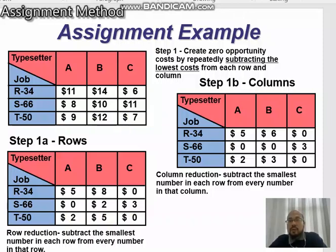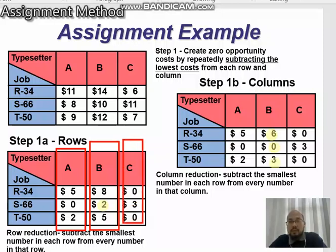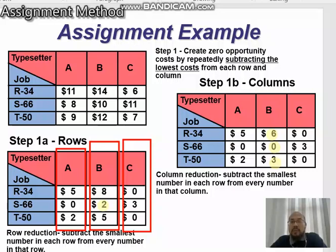Next, we move to column reduction. For the first column, there is already a zero, so no reduction needed. For the second column, between 8, 2, and 5, the smallest number is 2. So: 8 minus 2 equals 6, 2 minus 2 equals 0, and 5 minus 2 equals 3. For the third column, there is already a zero, so nothing to reduce. Step one is complete — we created the zero opportunity cost by row and then column reduction.